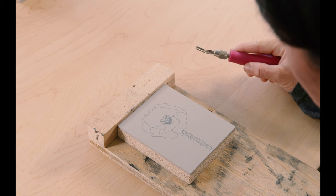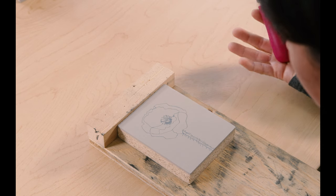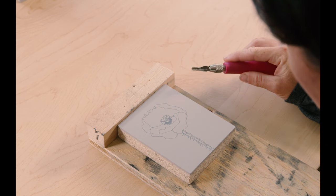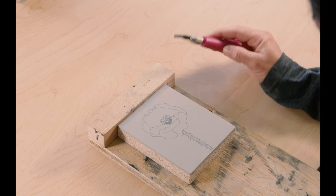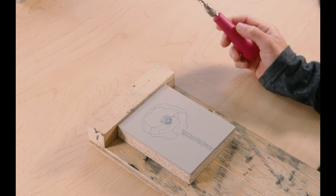So, I'm going to start with the outer border of the flower, kind of do the easier stuff first, and then we'll get into doing the details, the center of the flower, and the stem.